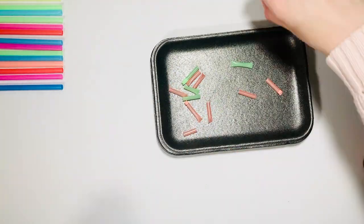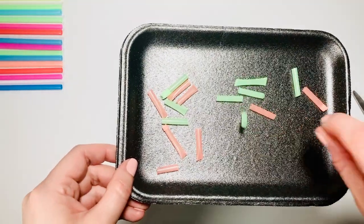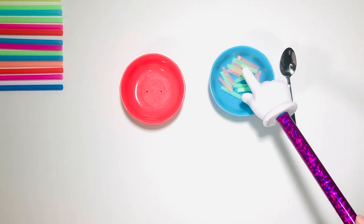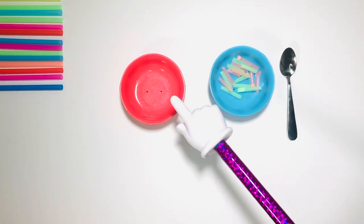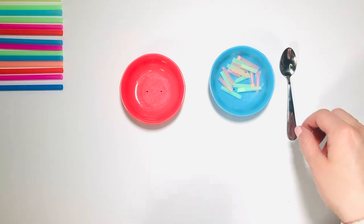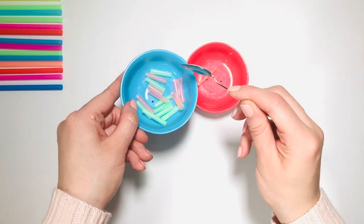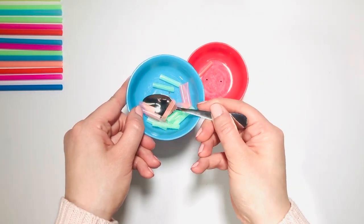To improve self-help skills, let's play game number six. You need a small spoon, cut up straw, and two little plates. Transfer the straw from one plate to another one by one. By using a smaller spoon, you are adding more challenge to the activity.